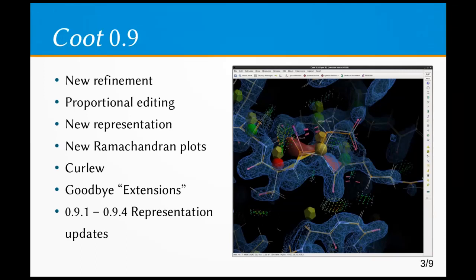Versions 0.9.1 through 0.9.4 have been incorporating and adjusting different representation oversights from 0.9. Version 0.9.4 will hopefully be out soon and will incorporate a fix to the hardware stereo and a re-weighting of the glycosylation module, which needs some work.